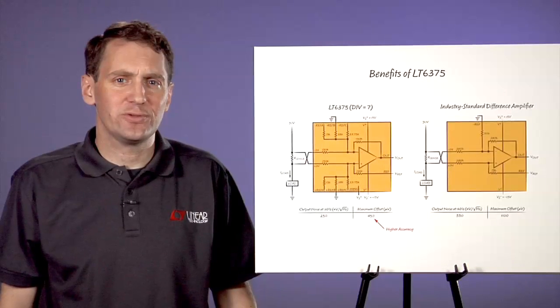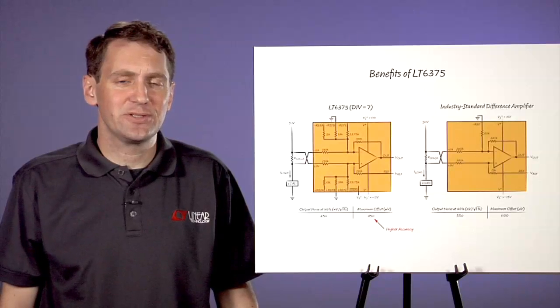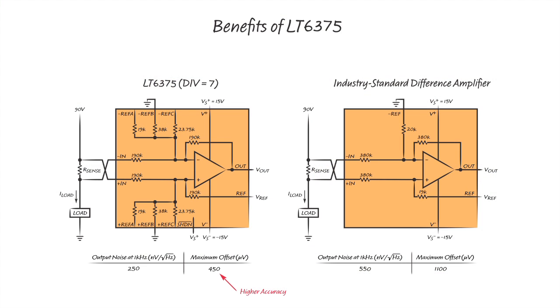For certain choices of input voltage and power supply voltage, the voltage division ratio of 20 is appropriate. If such a wide input common mode voltage range is not required, the voltage division ratio of the LT-6375 can be reduced. If the maximum required input range is 90 volts, we can use a resistor divider ratio of 7 and consequently improve the noise and offset performance of the amplifier.